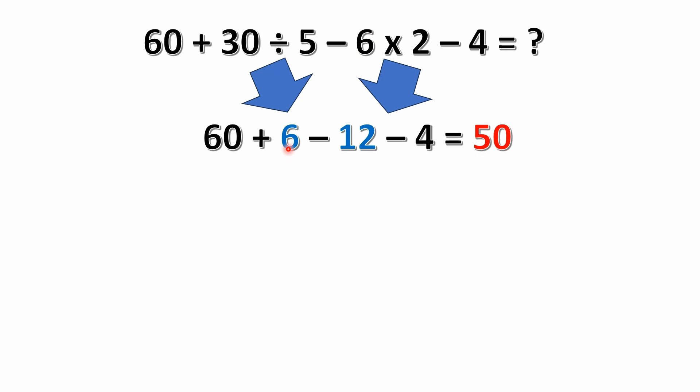30 divided by 5 equals 6. Then we have this multiplication 6 times 2. 6 times 2 is 12.